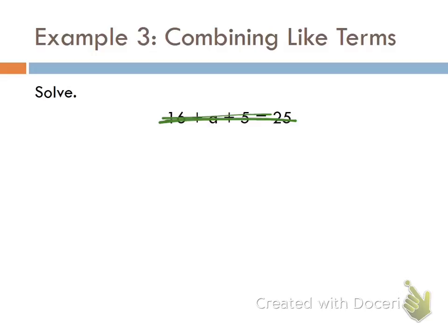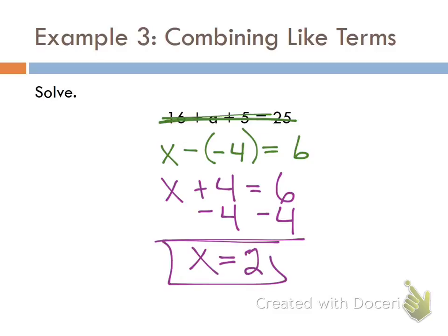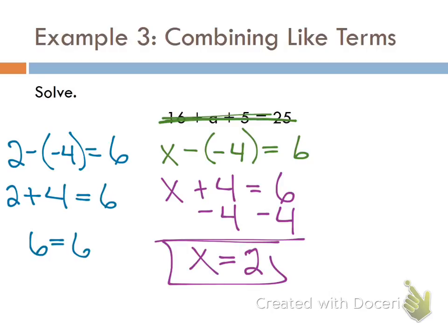One more example similar to your homework tonight: x minus negative 4 equals 6. A double negative changes to a positive, so the equation becomes x plus 4 equals 6. Subtract 4 from both sides — x equals 2. Now we go back and check: is it true that 2 minus negative 4 equals 6? Minus a negative is a positive, so yes — 6 equals 6.